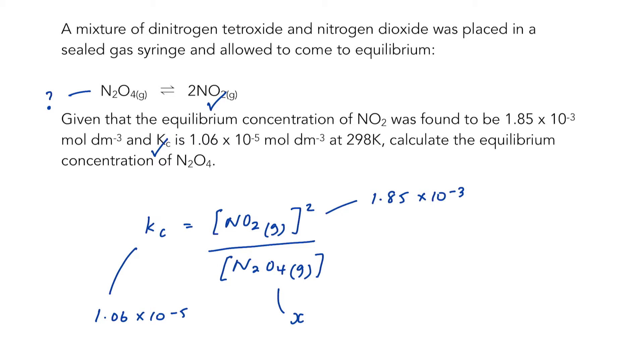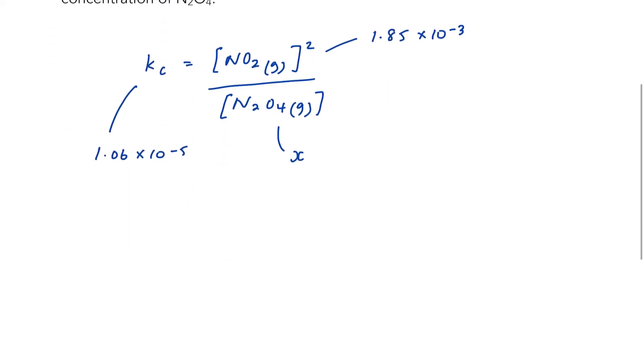So if we plug that in, we've got 1.06 times 10 to the minus 5 is equal to 1.85 times 10 to the minus 3 to the power of 2 divided by x. And that is quite straightforward to rearrange.